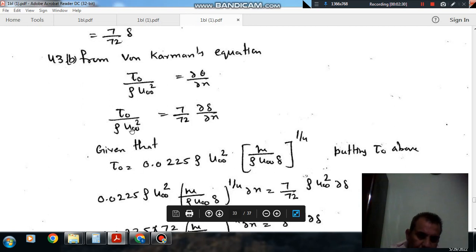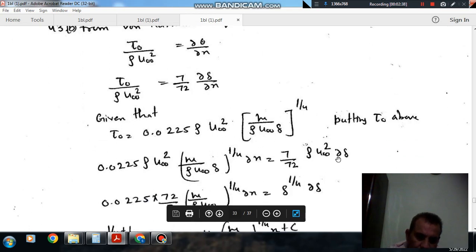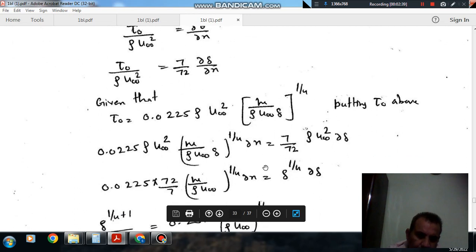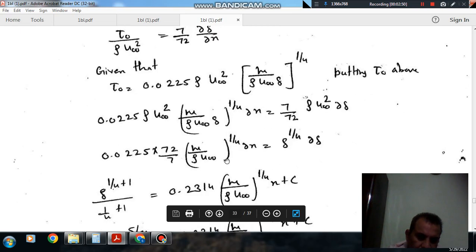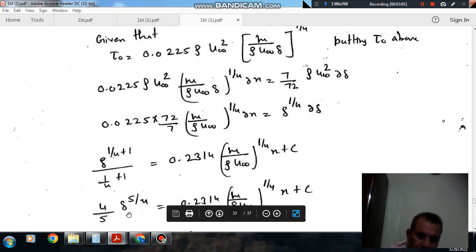Putting the values of tau_0 and multiplying by dx. If we integrate it, then delta^(1/4 + 1) divided by 1/4 + 1 gives 0.0314 nu divided by (rho u_infinity)^(1/4) times x plus c.